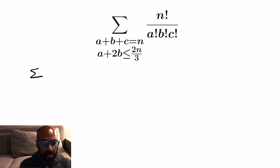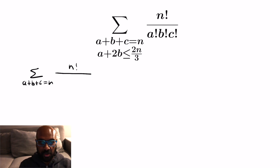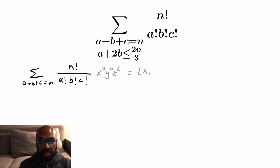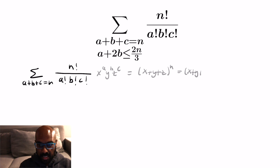We need to extend to three variables, so let's look at summing over a plus b plus c equal to n: n factorial over a factorial b factorial c factorial. We'll do the same thing as before but use three variables — attaching x to a, y to b, and z to c. It turns out if you look at this entire sum, it's going to be the expression x plus y plus z all raised to the n.